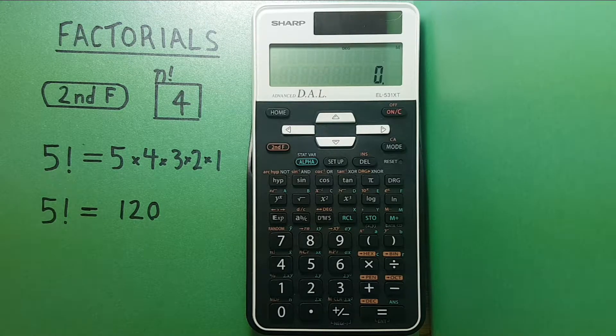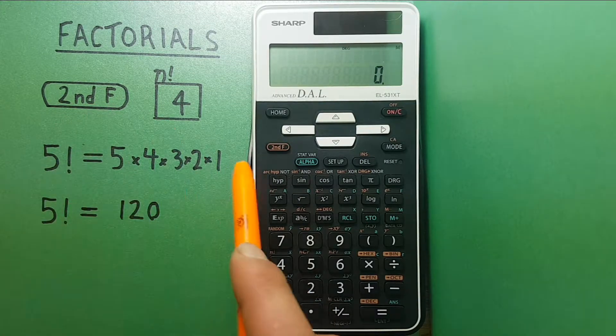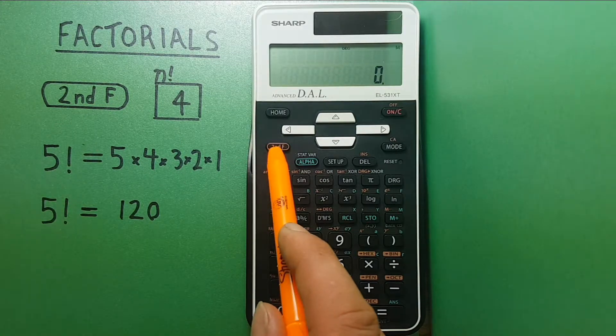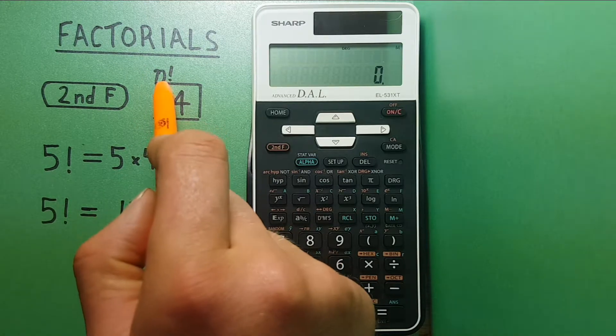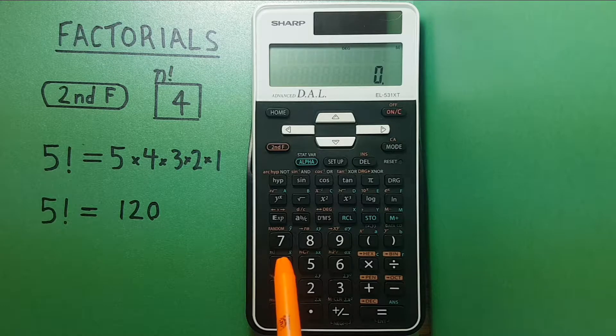To do this we'll be using these buttons. The 4 with the n factorial above it as its second function located here.